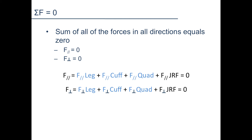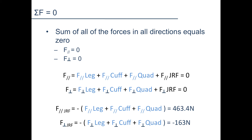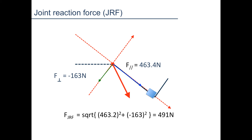All we have to do is plug in all the numbers we already know into the equation and solve it. We now know that the parallel component of the joint reaction force is 463.4 newtons, and the perpendicular component of the joint reaction force is negative 163 newtons. If we know the parallel and perpendicular components, we can easily calculate the total joint reaction force using the Pythagorean theorem.